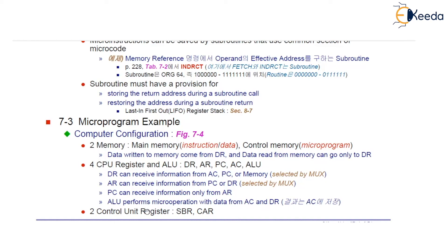When it comes to the control unit, there are two registers. One is the subroutine register, which holds the return address when a subroutine has been called. The control unit also has another register called CAR — the control address register — which holds the address of the current micro-instruction that is going to be executed.